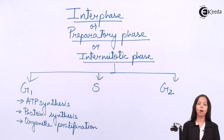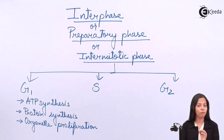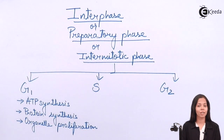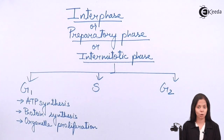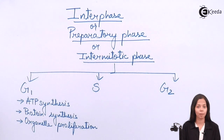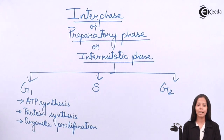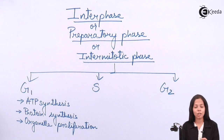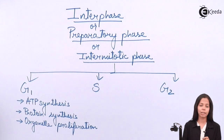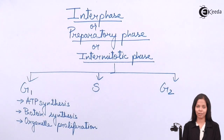S phase is the most important phase. Why? Because an important chemical is going to be synthesized. That important chemical is DNA. DNA duplication or DNA replication takes place in S phase.